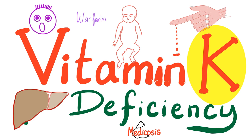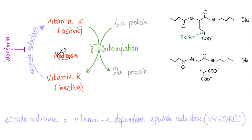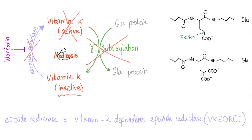To understand warfarin, you need to understand vitamin K. Active vitamin K is essential for gamma carboxylation, which is necessary for the activation of coagulation factors — specifically factors 2, 7, 9, and 10 — as well as protein C, protein S, and protein Z. When vitamin K performs its job, it goes back to the inactive form. To replenish and reactivate it, you need the enzyme epoxide reductase. Warfarin inhibits this enzyme, so vitamin K remains inactive, gamma carboxylation is blocked, and you lose factors 2, 7, 9, and 10, as well as protein C, S, and Z.